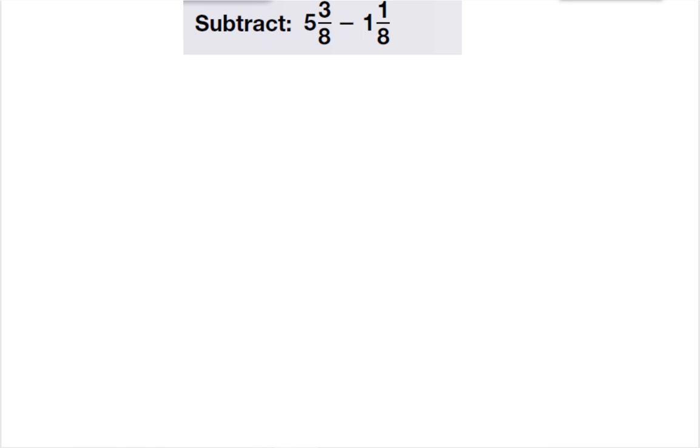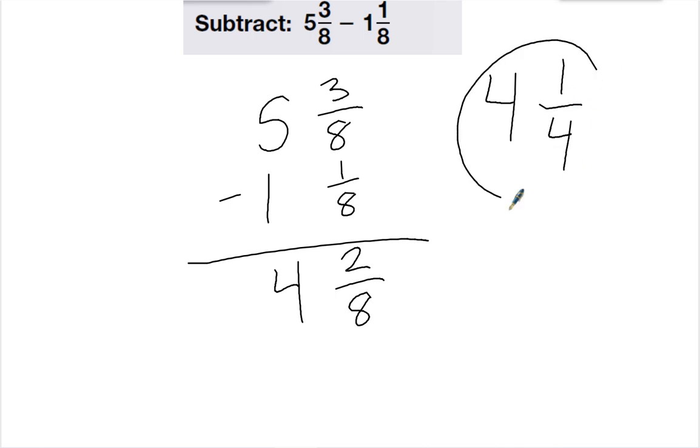The next part is on subtracting. So I have 5 and 3 eighths minus 1 and 1 eighth. So we're going to subtract the fraction first. 3 minus 1 is 2. So 2 eighths. And 5 minus 1 is 4. So I have 4 and 2 eighths. Now 2 eighths can be reduced down to 1 fourth. So we have 4 and 1 fourth was my final answer.